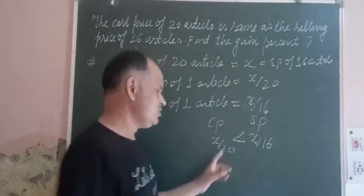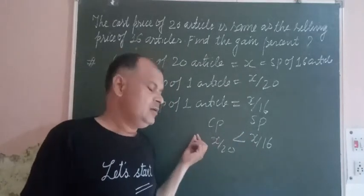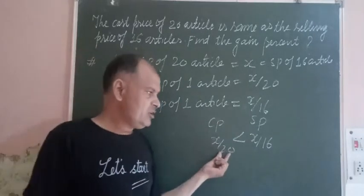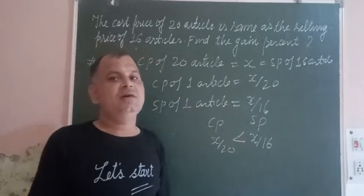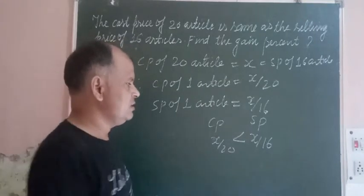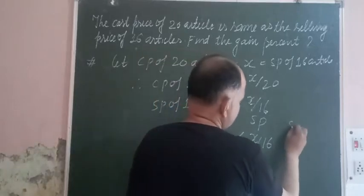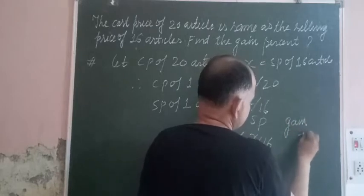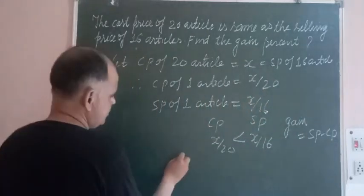Now, x upon 16 is greater than x upon 20. This is because the numerator is the same — when you divide into 16 parts versus 20 parts, the 16 parts are larger. So x upon 20 is less than x upon 16, therefore there is a gain.